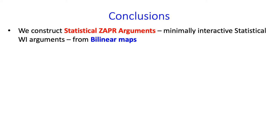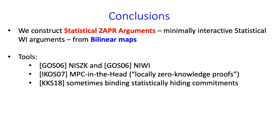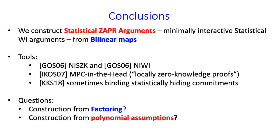To conclude, we construct statistical zapper arguments — the minimally interactive statistical WI argument — from standard assumptions on bilinear maps. We use a number of standard but powerful tools: the GOS NISZK (both variants), the MPC-in-the-head technique abstracted as a locally zero-knowledge proof, and a sometimes-binding statistically hiding commitment integral to all constructions of two-message statistical WI protocols. Interesting open questions include: is there a construction from factoring? And can we have any construction of a two-message statistical WI argument without complexity leveraging, which has appeared in every construction so far? Thank you for listening.